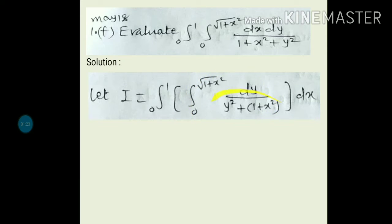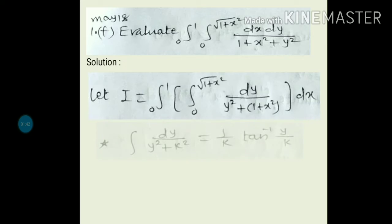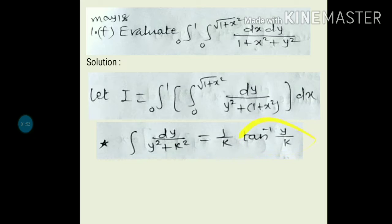Look at the function: it is 1/(y² + 1 + x²). When integrating with respect to y, 1 + x² will be a constant. So how do we integrate 1/(y² + 1 + x²) with respect to y? Recall the formula: integration of dy/(y² + k²) = (1/k) tan⁻¹(y/k), where k is any constant.